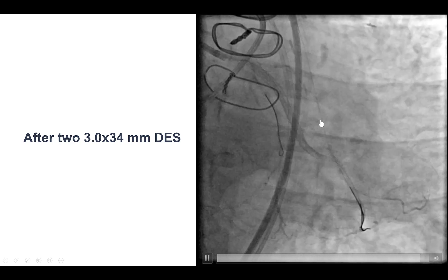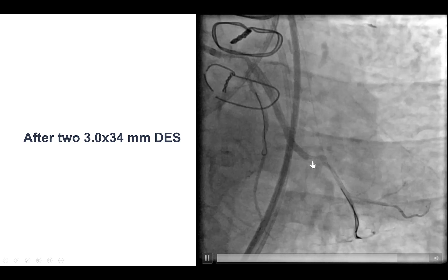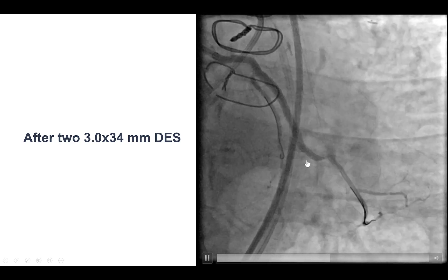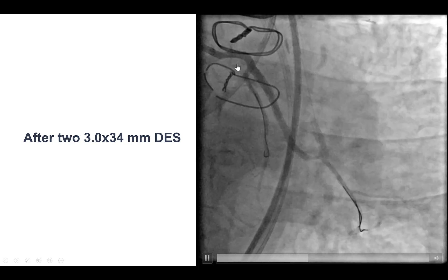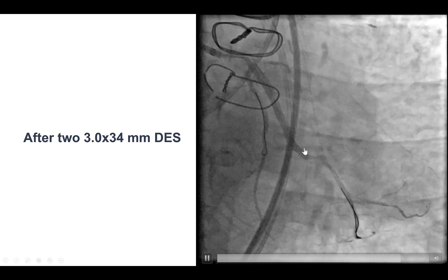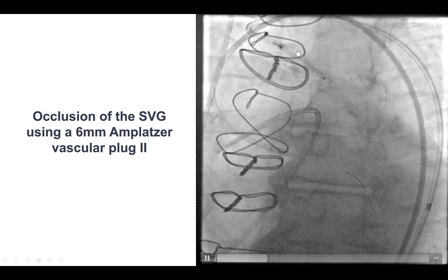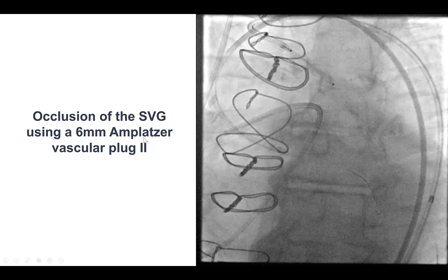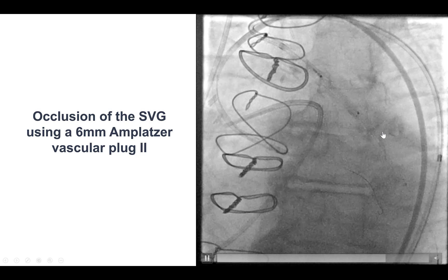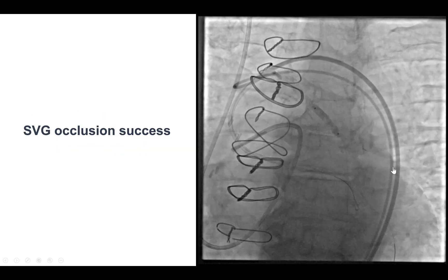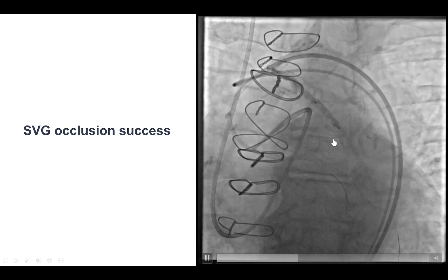However, there was very heavy competitive flow through the saphenous vein graft, and quite often in these cases, we occlude the vein graft to minimize the competitive flow and reduce the potential risk of thrombosing the new stents placed in the CTO. So we did use a guide extension to deliver a 6 mm Amplatzer Vascular Plug 2 to the vein graft, and after deploying it, we did have a successful occlusion of the saphenous vein graft.